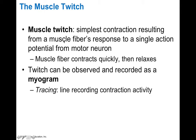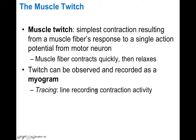Muscle twitches are the simplest contraction that results from a muscle fiber's response to a single action potential. Muscle fibers contract quickly and then relax more slowly. These twitches can be observed and recorded as a myogram — myo meaning muscle, gram meaning graph — giving a trace or line recording of contraction activity. Myograms occur in three phases: a latent period, a period of contraction, and a period of relaxation. The latent period is the delay between the stimulus and onset of contraction where no tension is produced. The contraction period is when cross bridges form and tension increases. The relaxation period is when calcium re-enters the sarcoplasmic reticulum, causing tension to decline toward zero. Muscles contract faster than they relax because it's easier to release calcium from the SR than to pump it back in.